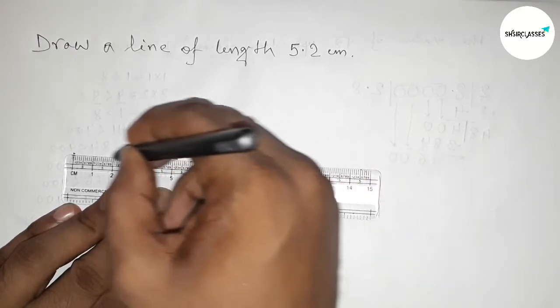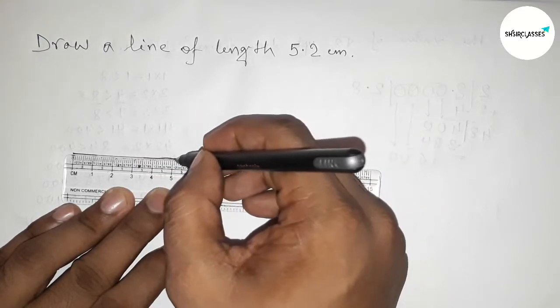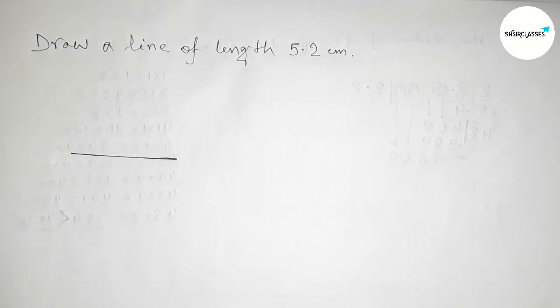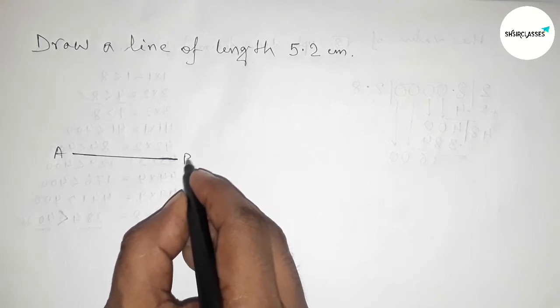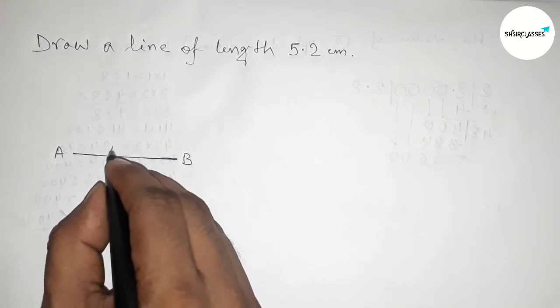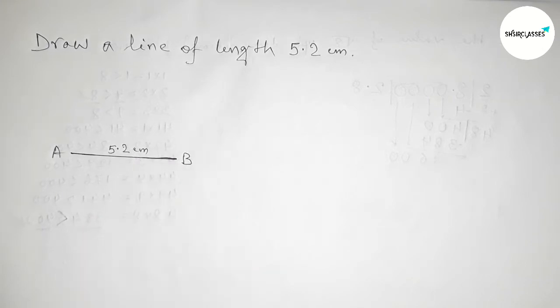And joining this line. Now taking here a point here A and here B. So AB is a line of length five point two centimeter.